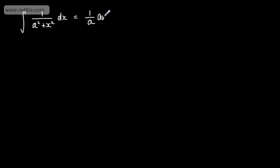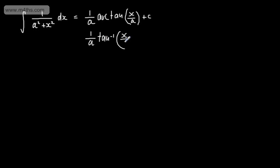In this video, we're going to look at integration, and in particular, standard results for inverse trig functions. If we have the integral of 1 over a squared plus x squared and we integrate with respect to x, the standard result is 1 over a, and then we have arctan of x over a plus a constant of integration. Sometimes you'll see it written as arctan, or you might see it as the inverse tan — tan to the minus 1 of x over a plus c, where a and c are constants.